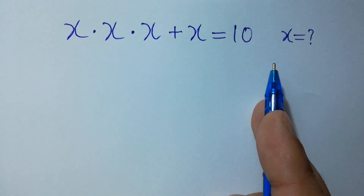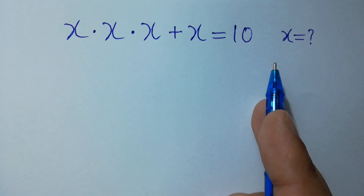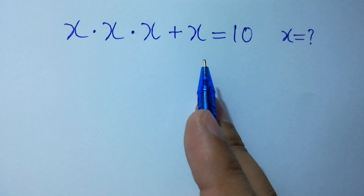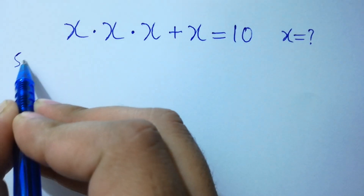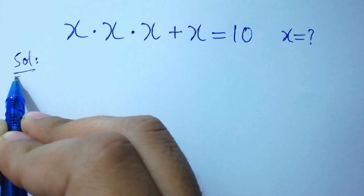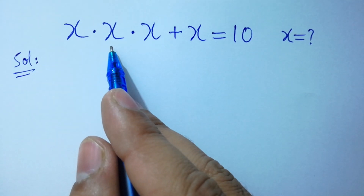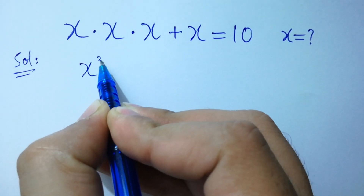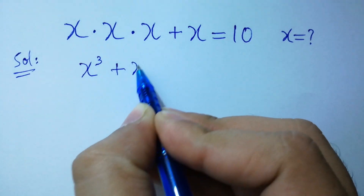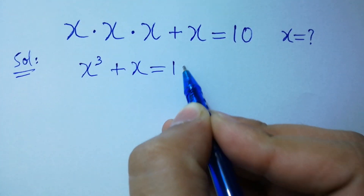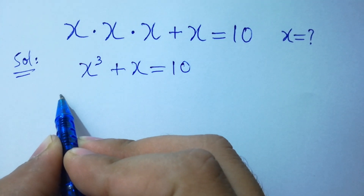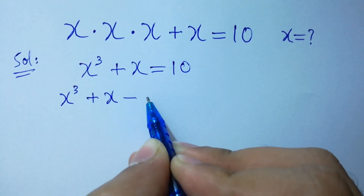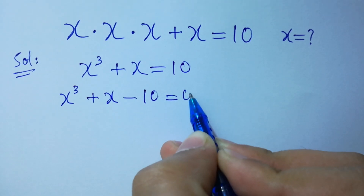Hello friends. Find the value of x if x times x times x plus x equals 10. Let's solve it. x times x times x is x cubed, so x cubed plus x equals 10, which gives us x cubed plus x minus 10 equals 0.